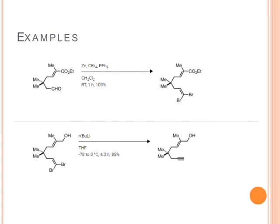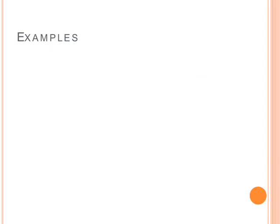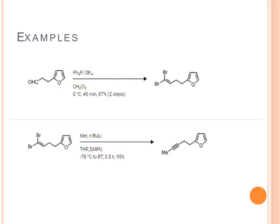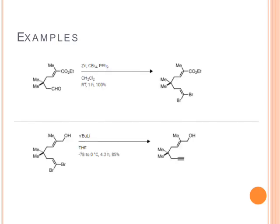In the second example, the aldehyde is first treated with carbon tetrabromide, triphenylphosphine, and zinc dust to generate dibromo olefin, and that on treatment with n-butyl lithium generates terminal alkyne. Remember, in the first example we used methyl iodide, which is why the alkyne is non-terminal — there is introduction of a methyl group. In the second example, we used only n-butyl lithium, so there is transfer of a hydrogen atom and hence a terminal alkyne is obtained.